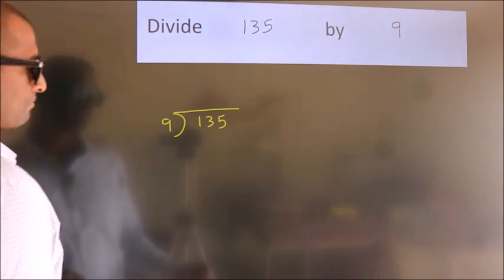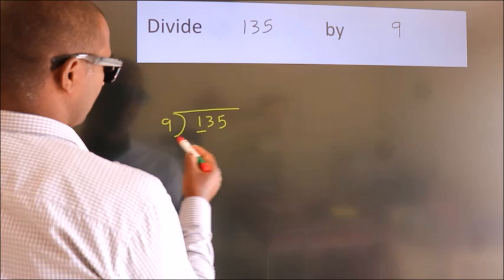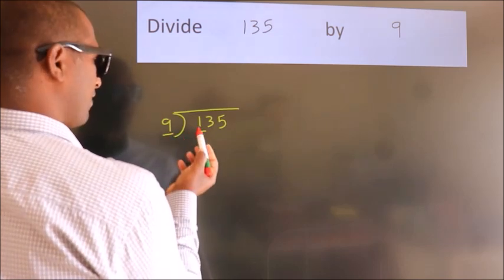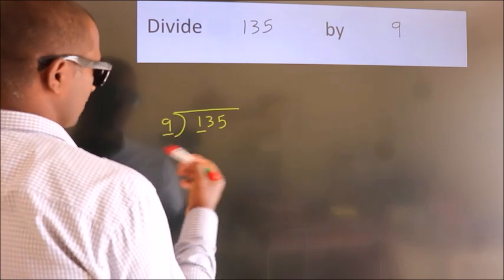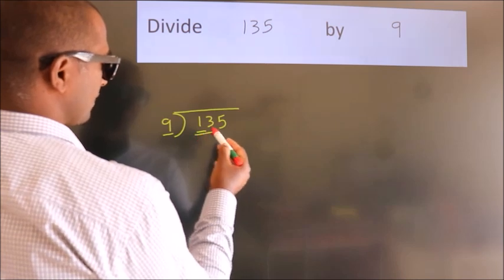Next, here we have 1. Here 9. 1 is smaller than 9, so we should take two numbers: 13.